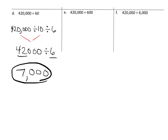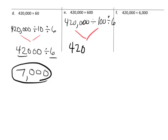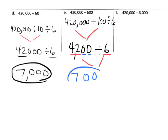Let's do another example: 420,000 divided by 600, which we break into dividing by 100 followed by dividing by 6. Dividing by 100 drops off two zeros, giving us 4,200. Then we divide by 6: 42 divided by 6 is 7, and we have two extra zeros, so the answer is 700.